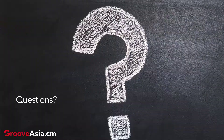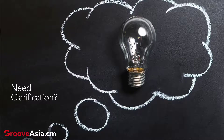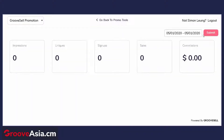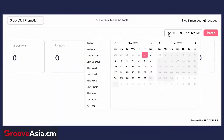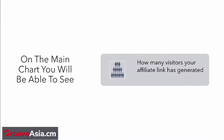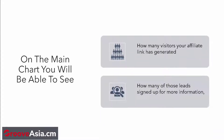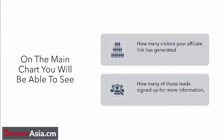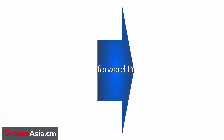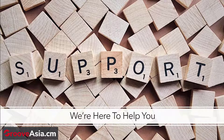We're here to help, so if you have any questions or need clarification on anything, please don't hesitate to reach out. On the top, you'll see a snapshot of your affiliate performance. You can set the date range of the statistics you want to see by clicking on the date field, selecting your specific date range, then clicking submit. Within the main chart, you'll be able to see how many visitors your affiliate link has generated, how many of those leads have signed up for more information, and how many sales are tracked through your link.